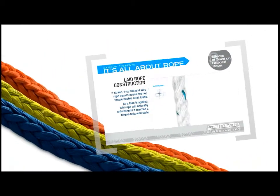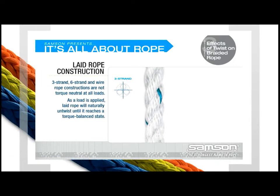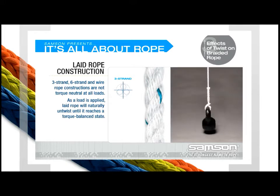Laid or twisted ropes, such as 3-strand, 6-strand, and wire rope constructions, are not torque-neutral at all loads. As a load is applied to a laid rope, the rope will naturally untwist until it reaches a torque-balanced state. Laid ropes can be torque-balanced at a specific load range; however, this will not eliminate all untwisting while the rope is loaded.